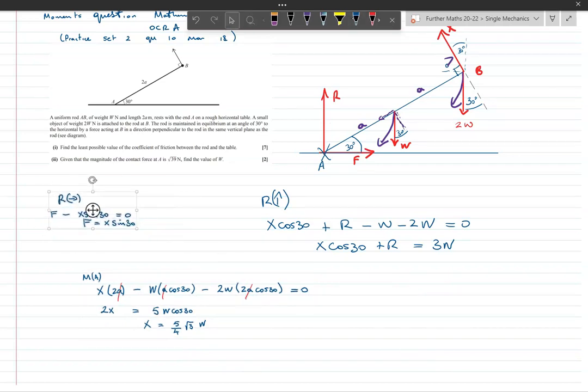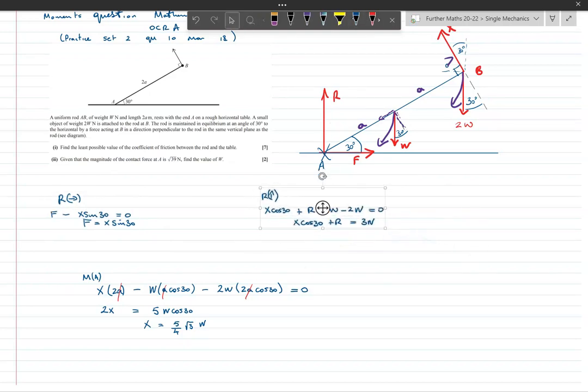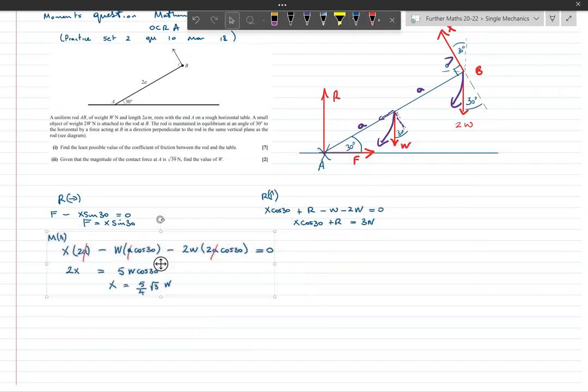It's just a case of doing a bit of substitution now. We have F is equal to 5 over 4 the square root of 3W sine 30. Now sine 30 is a half, so that gives me F is equal to 5 over 8 the square root of 3W.